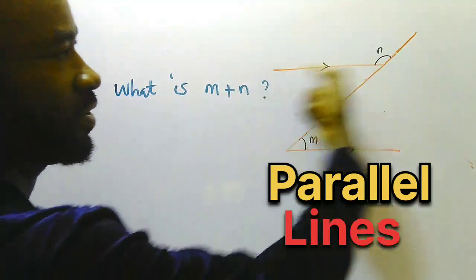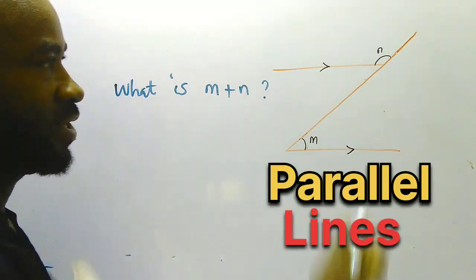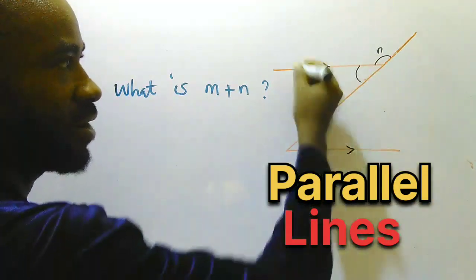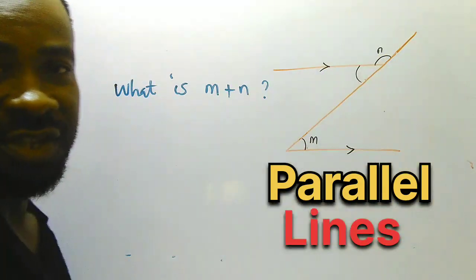Now, these two are parallel lines. So you can see that we are having a Z here, sort of a Z. That Z angle there is what we call alternate angle.